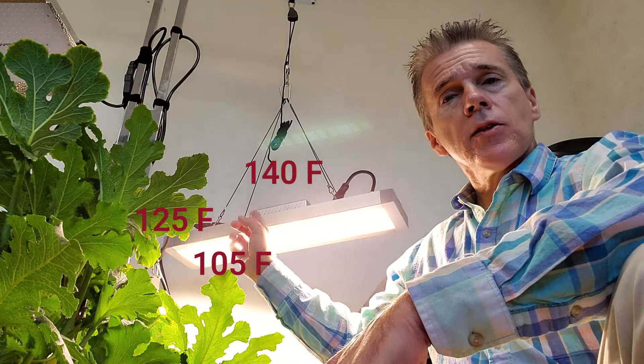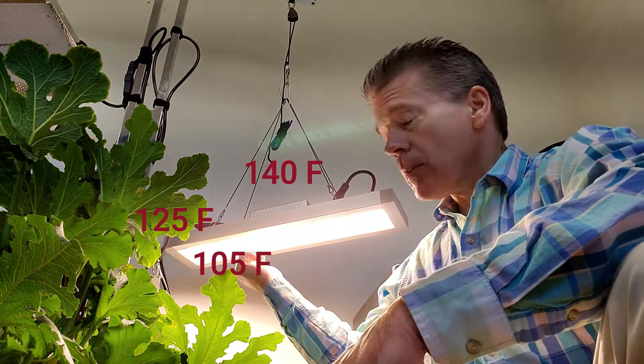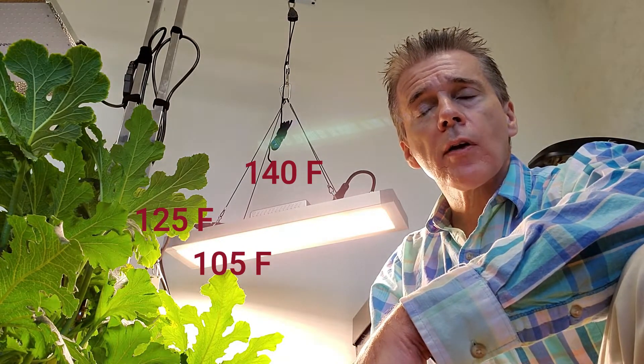On the heat sink, runs across the top and back of the light, about 120, 125. And underneath, directly pointed up at the lights, around 105 degrees Fahrenheit.